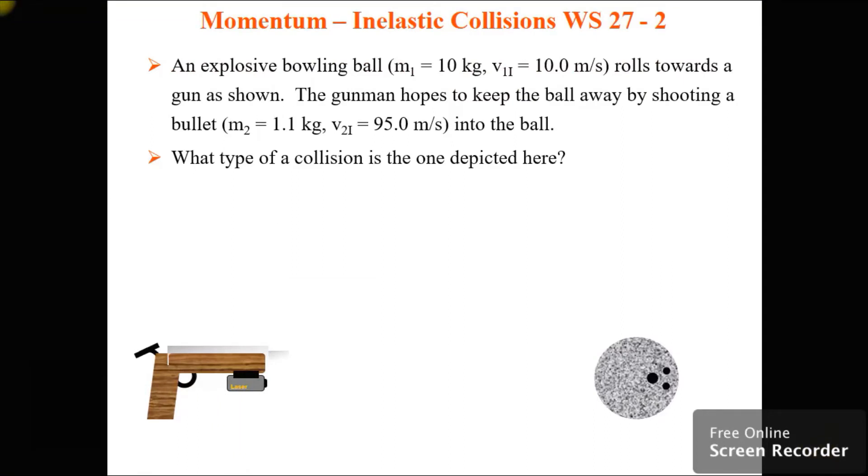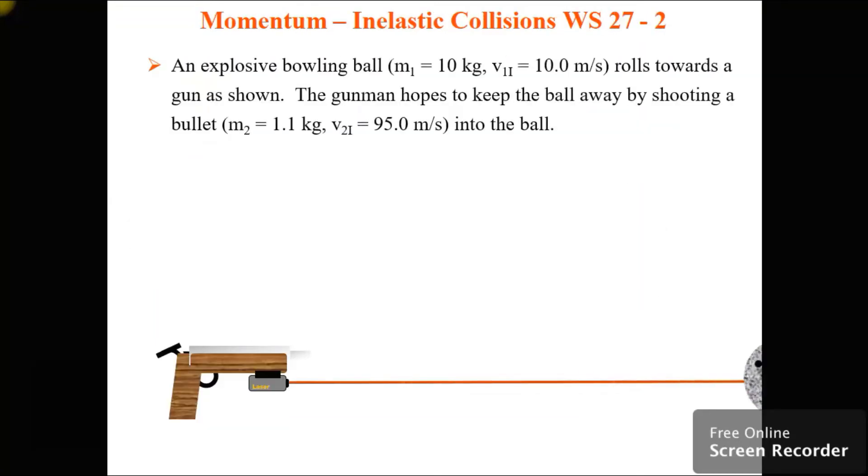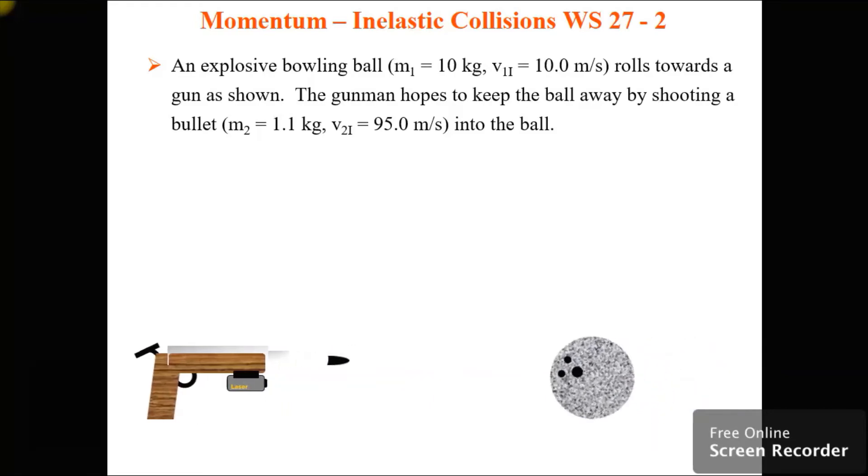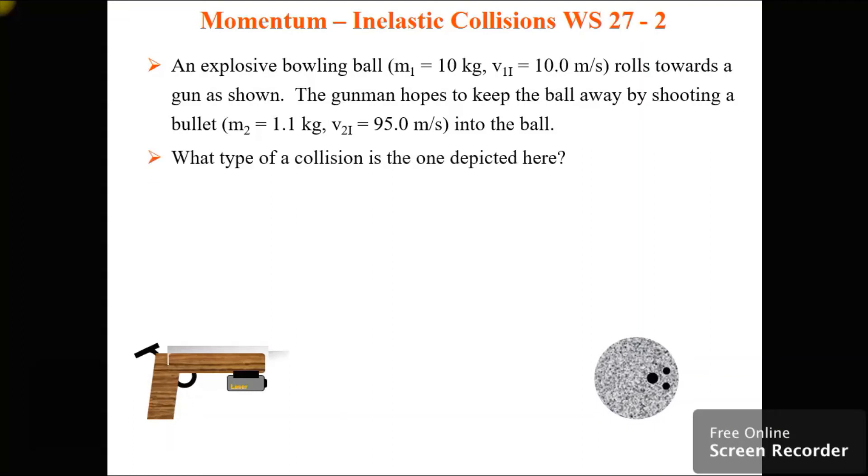So here's another good example. We've got a bowling ball that weighs 10 kilograms and is moving at you at 10 meters per second. And they shoot the gun where the bullet weighs a mass of 1.1 kilograms, which is huge for a bullet, and a velocity of 95 meters per second. What type of collision is the one depicted here? Here comes the bowling ball. There's the bullet, and it sends it backwards. So there's the scene. What type of collision? Inelastic, because they stick together. And what's the final velocity of the bowling ball? We can solve that through the math of it all.